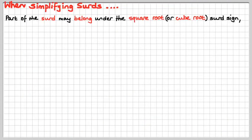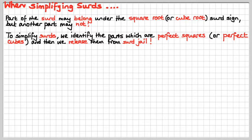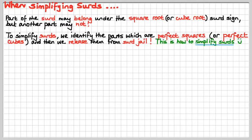When simplifying surds, we find that part of the surd may belong under the square root sign or the cube root sign as the case may be, and another part may not. So to simplify surds, we must identify the parts which are perfect squares in the case of a square root surd, or perfect cubes in the case of a cube root surd, and then we release them from surd jail, because they don't belong there. They've got to get out of jail — we let them out, and in the process we simplify the surd. The imposters are all out of jail. This is how to simplify surds.